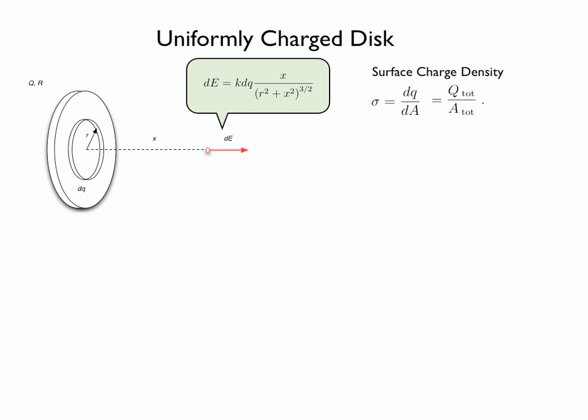For a uniformly charged disk, the surface charge density sigma will also be equal to the total charge q over the total area of the disk.